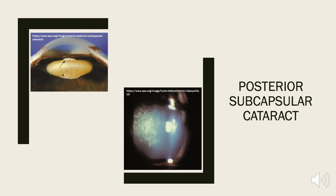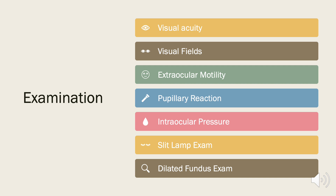Posterior subcapsular cataracts develop in the most posterior layer of the cortex, which is directly beneath the lens's capsule, shown in the top left image by the arrowhead and the bottom right image. When evaluating a patient with concern for cataracts, the primary objectives are to determine if the opacity is causing visual impairment, if the opacity accounts for the level of vision or if there's another coexisting disease, if removal of the cataract will likely improve vision, whether it's worth the risk of cataract surgery, and whether the patient can tolerate the surgery and post-operative care.